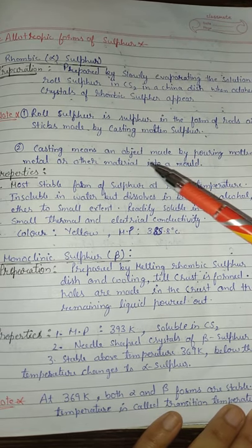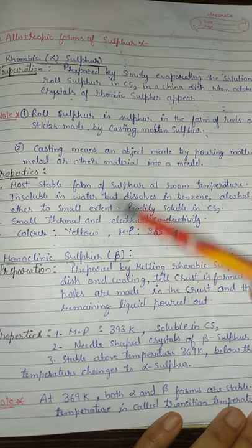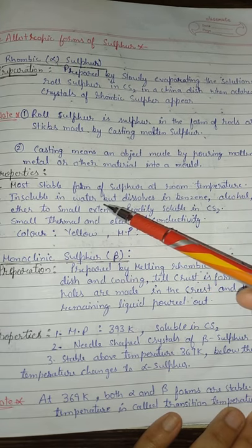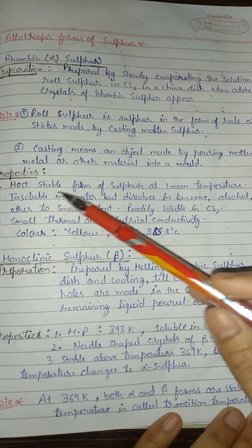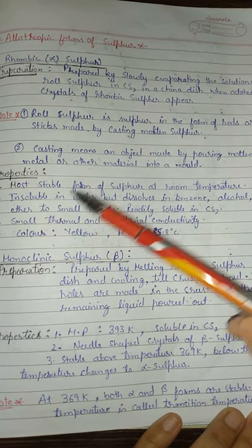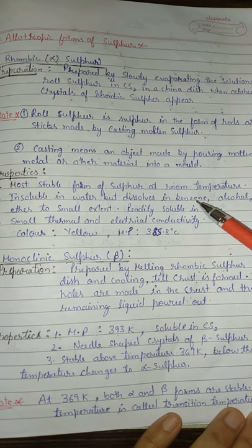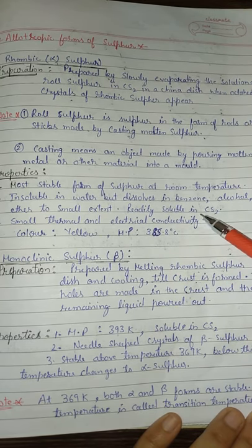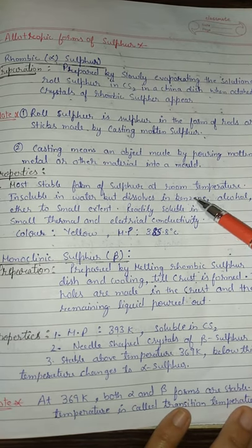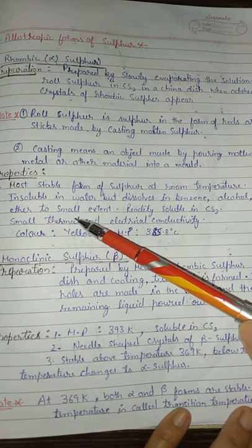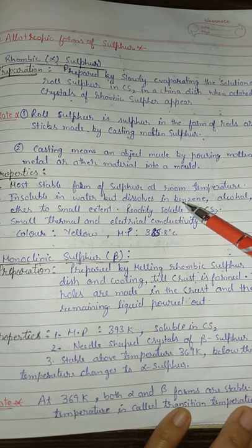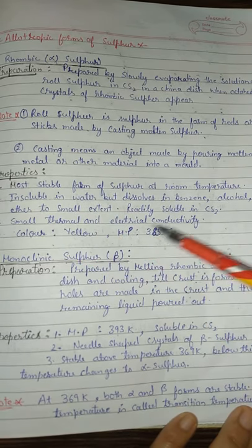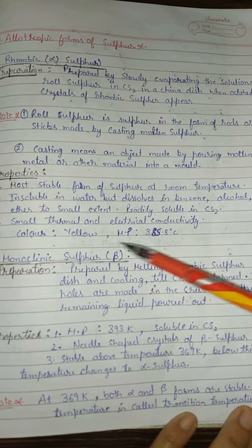Properties of rhombic and monoclinic sulfur can be compared if asked for differences. Rhombic sulfur is the most stable form at room temperature. It is insoluble in water but dissolves in organic solvents like benzene, alcohol, and ether to a small extent, and is readily soluble in carbon disulfide. It has very small thermal and electrical conductivity. Color: yellow. Melting point: 385.8°C.